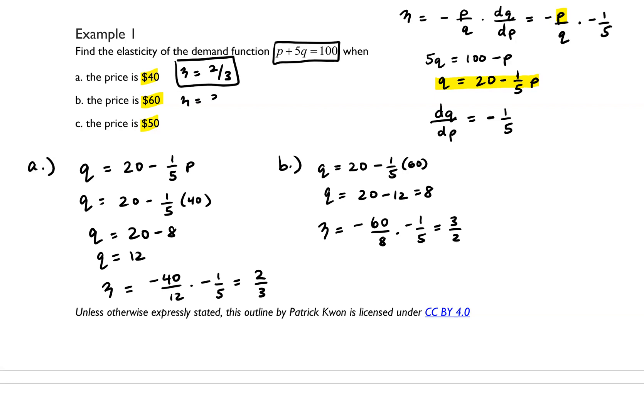So eta is equal to 3 halves for part b. And then lastly, for part c, we have q is equal to 20 minus 1 fifth times 50, and that gives us 20 minus 10, which is equal to 10. So in this case, eta is equal to negative 50 over 10 times negative 1 fifth, and that ends up equaling 1. So in this case, we get eta is equal to 1. And those are the elasticity of demand for part a, b, and c.